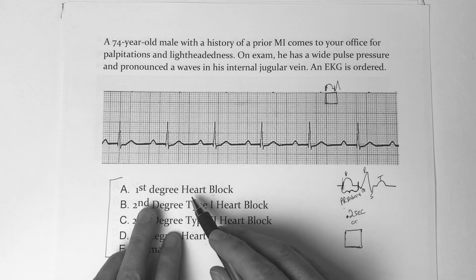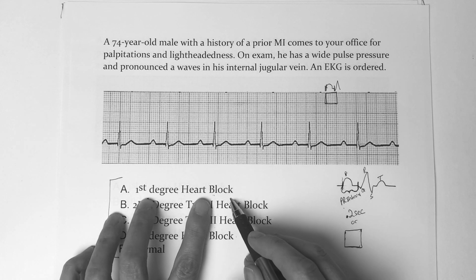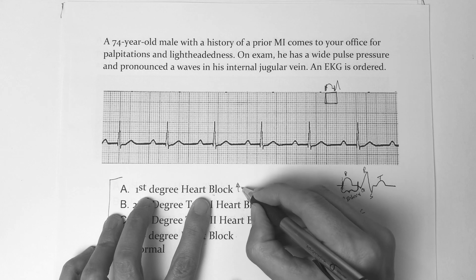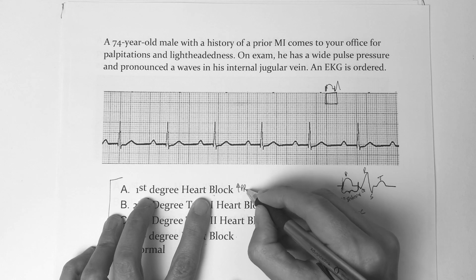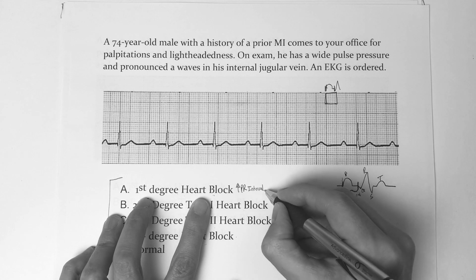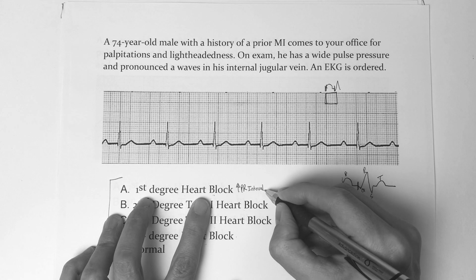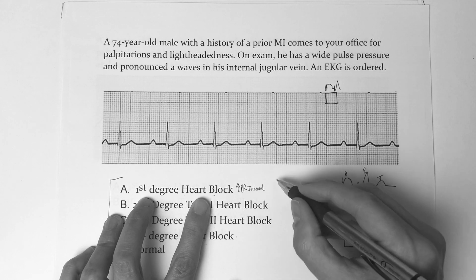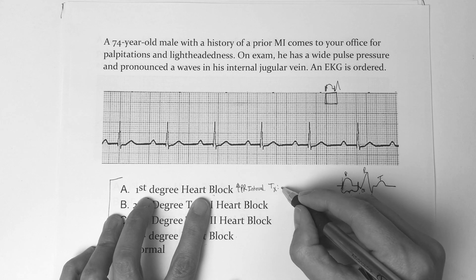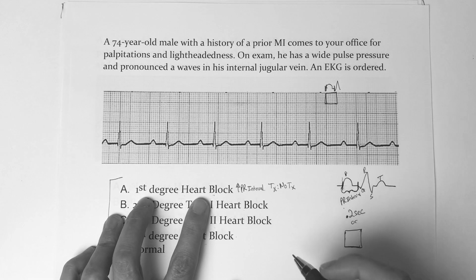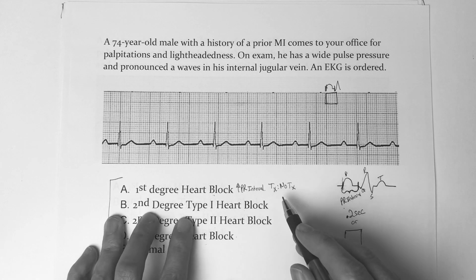When it comes to a first-degree heart block, what they're telling us is that it's an increased PR interval. Signs and symptoms: increased PR interval. Treatment: no treatment. You're not going to do anything with that.